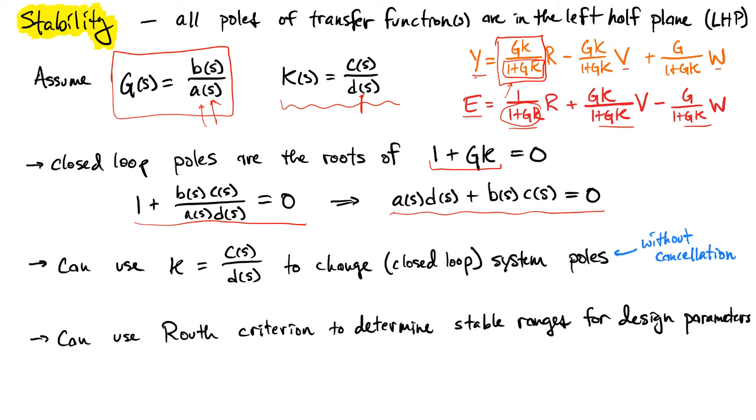However, the key insight here is the fact that the poles are going to depend on all of these factors: a(s), d(s), b(s), c(s). So the closed-loop poles can be manipulated by changing our controller. That's the key insight, and that tells us that there is hope to change the stability simply based on using this controller.